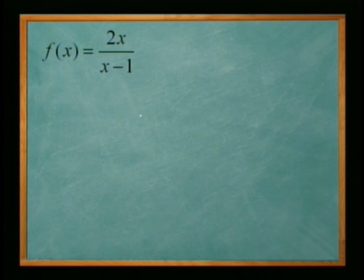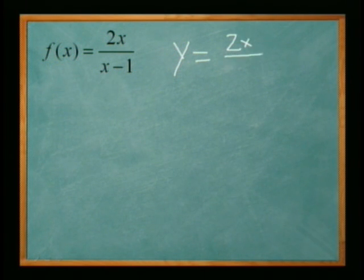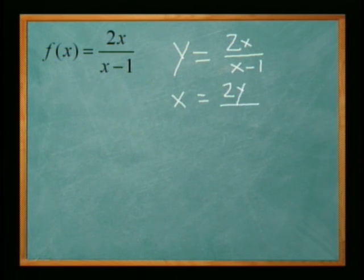Alright, so here's another inverse function. We're going to do the same thing. We're going to write it with a y instead of f of x. And then we're going to swap the x and y's. So y becomes x. And you get 2y over y minus 1.